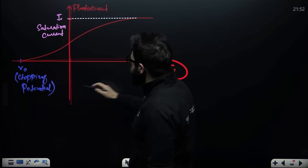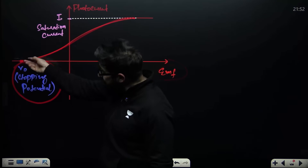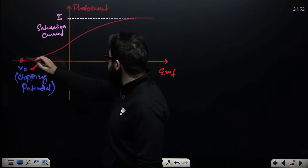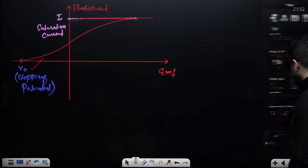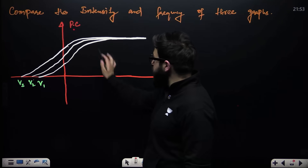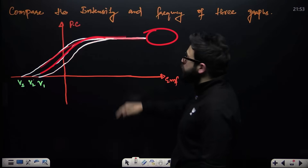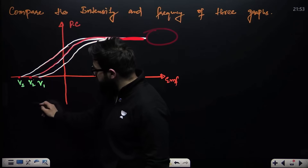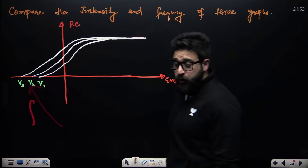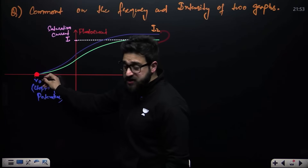In the graph of photo current versus EMF: stopping potential is the potential at which no current flows, so current is zero there. The saturation current is the peak current. In one set of graphs, all three curves have the same photo current — meaning same intensity — but different stopping potentials, meaning different frequencies. In another graph, intensity is different but stopping potential is same, meaning frequency is the same.